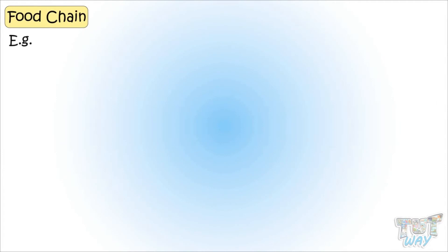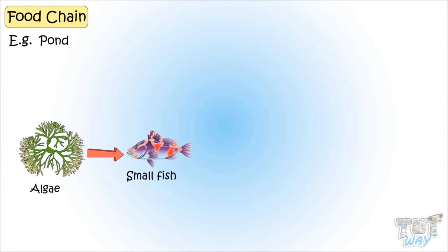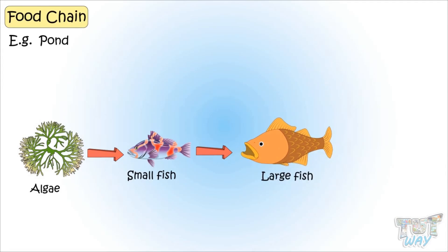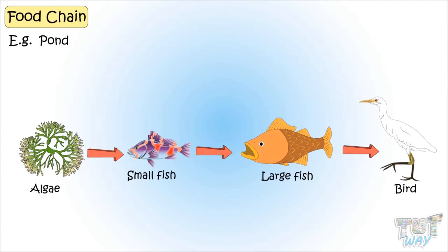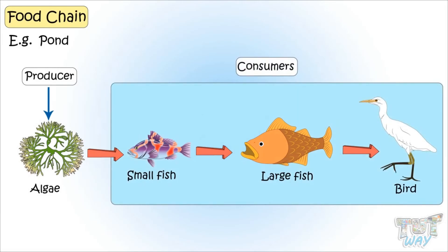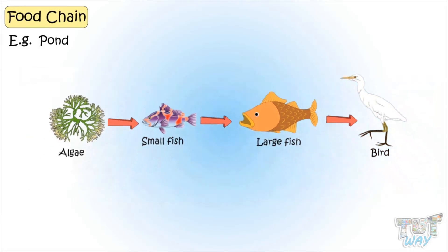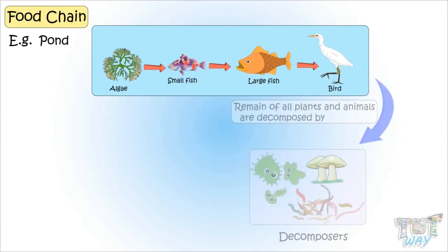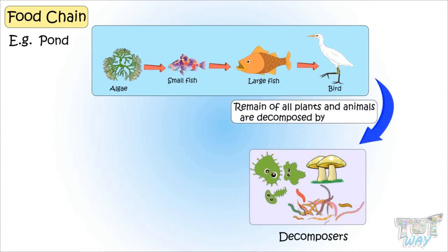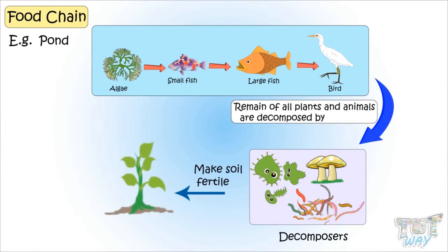Here we have a small food chain from a pond. First of all, algae is eaten by small fish. Small fish is eaten by larger fish. And larger fish is eaten by swans or eagles. In this food chain, algae is a producer. The rest all are the consumers. And when all these organisms die, decomposers will decompose them and again convert them into nutrients, which will again make the soil fertile.